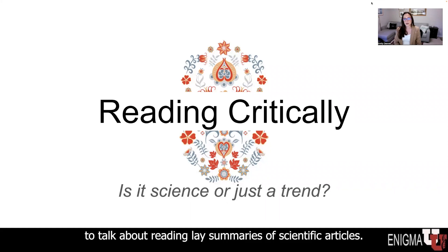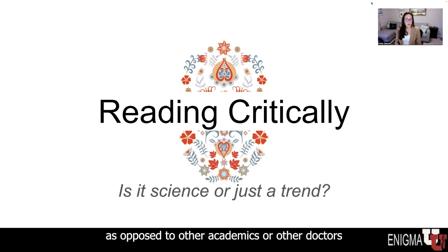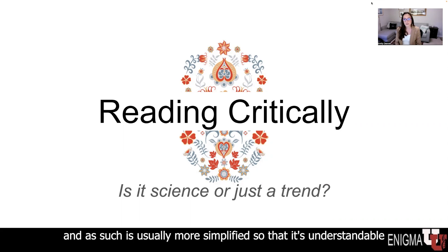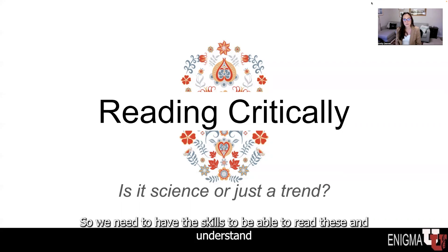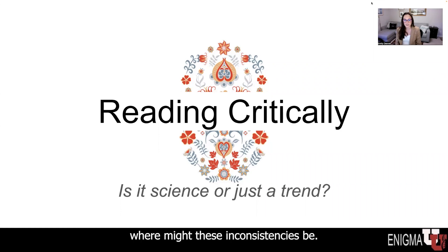In this session, we are going to talk about reading lay summaries of scientific articles. A lay summary is an article directed towards the public as opposed to other academics or doctors, and as such is usually more simplified so that it's understandable to people who don't have an extensive scientific background. Sometimes these things are simplified to the point that they aren't actually correct, so we need the skills to read these and understand where the inconsistencies might be.